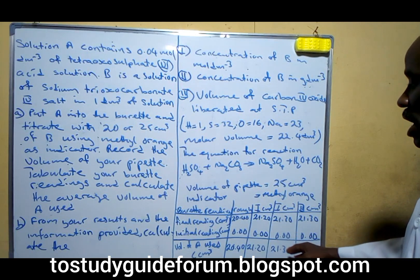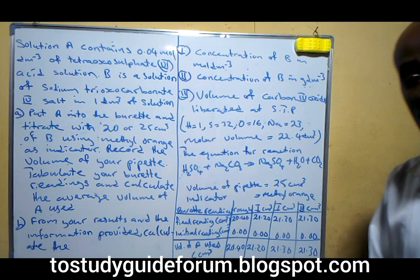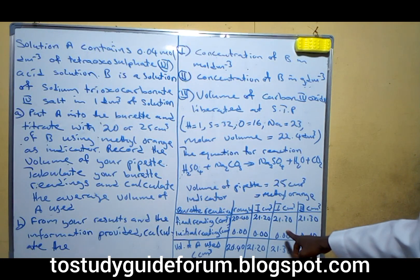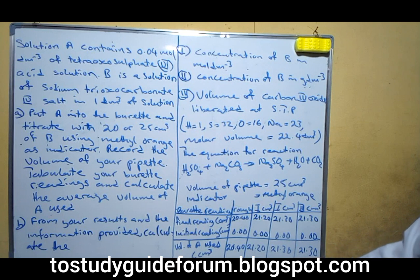The next thing we are going to do is get the average volume. Before you do this average volume, make sure you take the ones that are close to each other. If you look at the data, you'll find that 21.3 and 21.3 are quite close, so we can go with that.